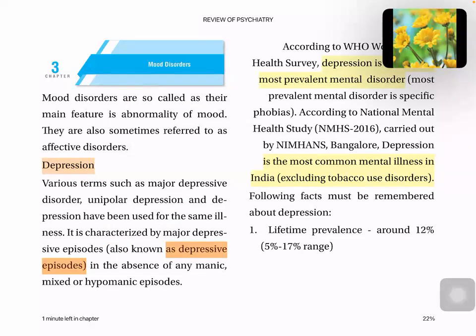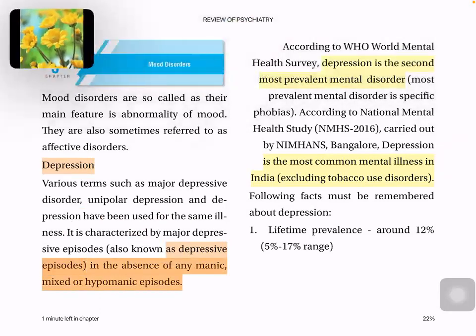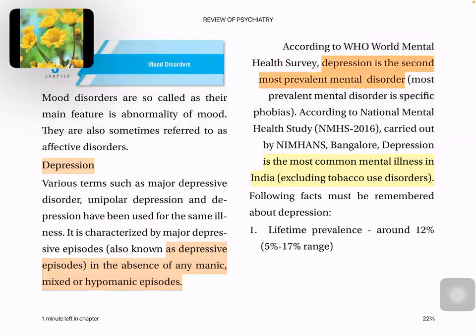First, we are going to discuss about major depressive episodes or depressive episodes in the absence of manic, mixed or hypomanic episodes — so that we can distinguish it from bipolar disorder. Depression is the second most prevalent mental disorder. It is the most common mental disorder in India, excluding tobacco use disorder. This is an MCQ point. Females have more prevalence for depression.